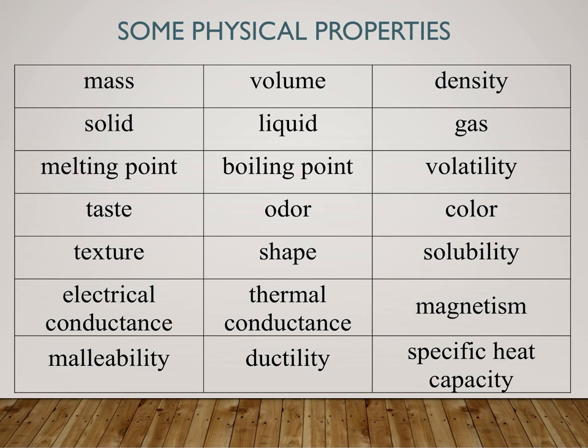Here's a bunch of physical properties — there are lots. We've got mass, volume, odor, taste (though don't taste anything in the lab), solubility — does it dissolve? — ductility, specific heat capacity. All of these things are physical properties. They are things you can understand about your substance without changing its composition.